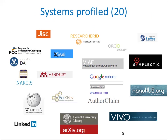We started with a list of over 100 different research information identifier systems, and we used two criteria to select the systems to profile. One, have significant mind share or take-up by researchers, and two, researchers are represented by a persistent, unique, and publicly accessible URI. We wanted to end up with a representative sample of different research information identifier systems. For some system types, we profiled only one system to represent a category.